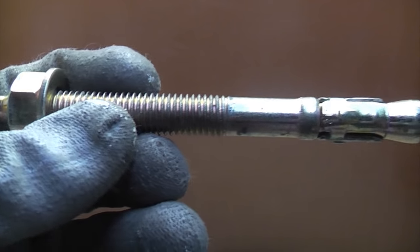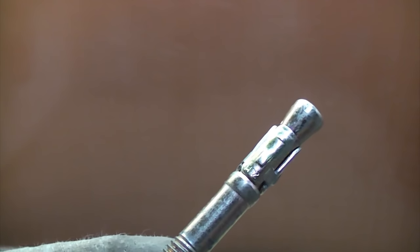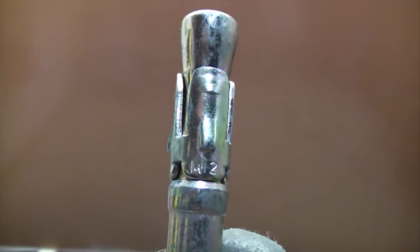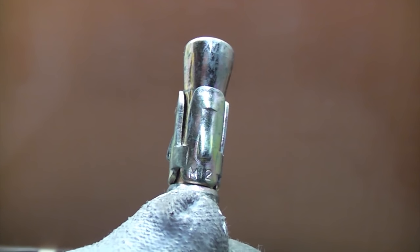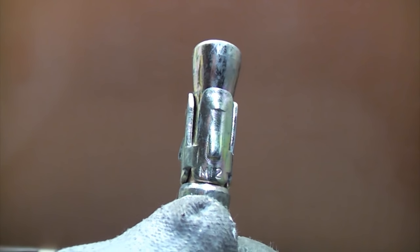Through bolts like this work off expansion, so it's essential that you drill the correct size hole. If you look just there at the end you should see that it says M12, so that means that we have to use an M12 drill for drilling our hole.